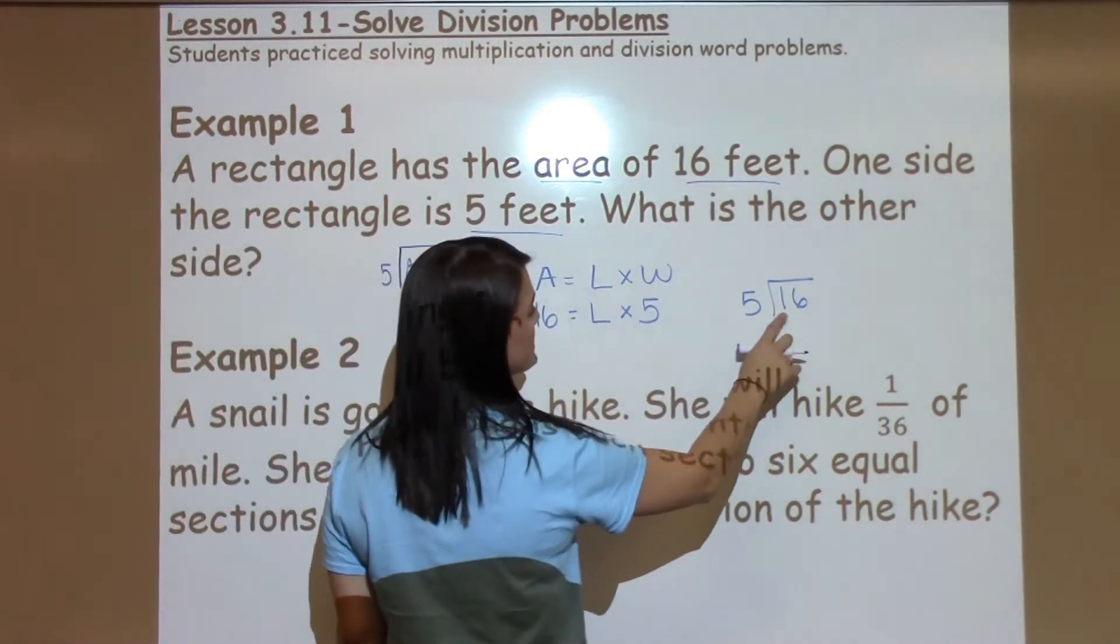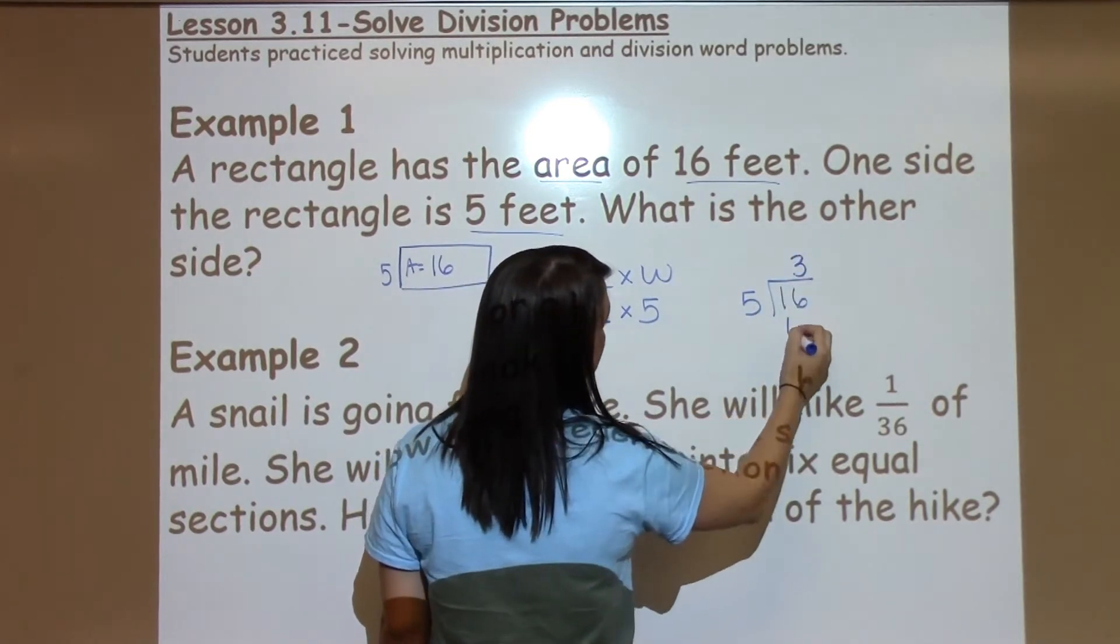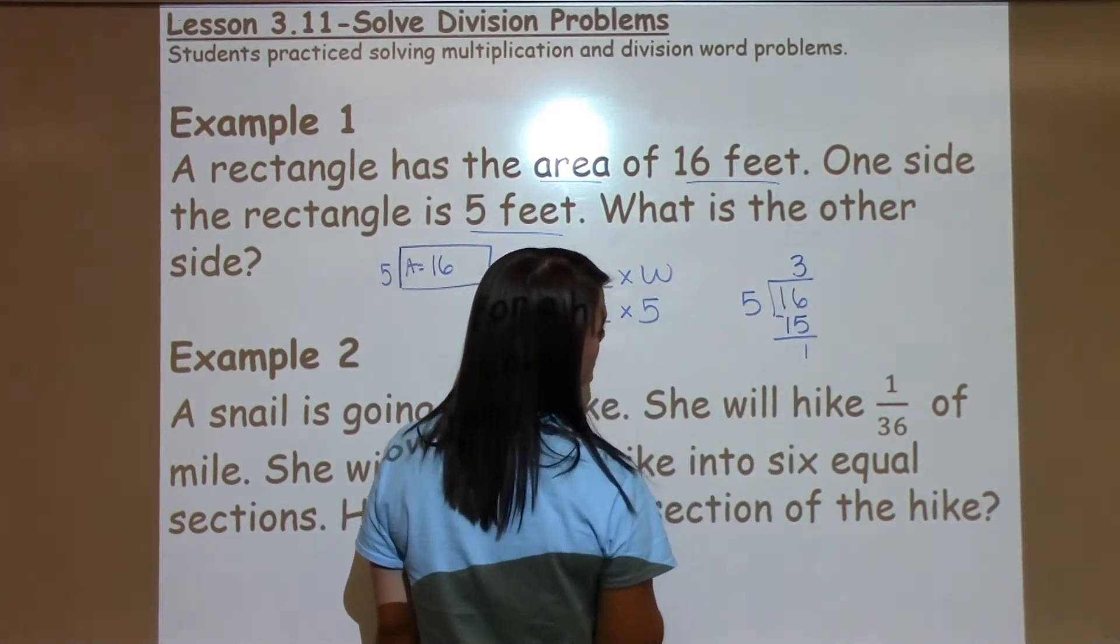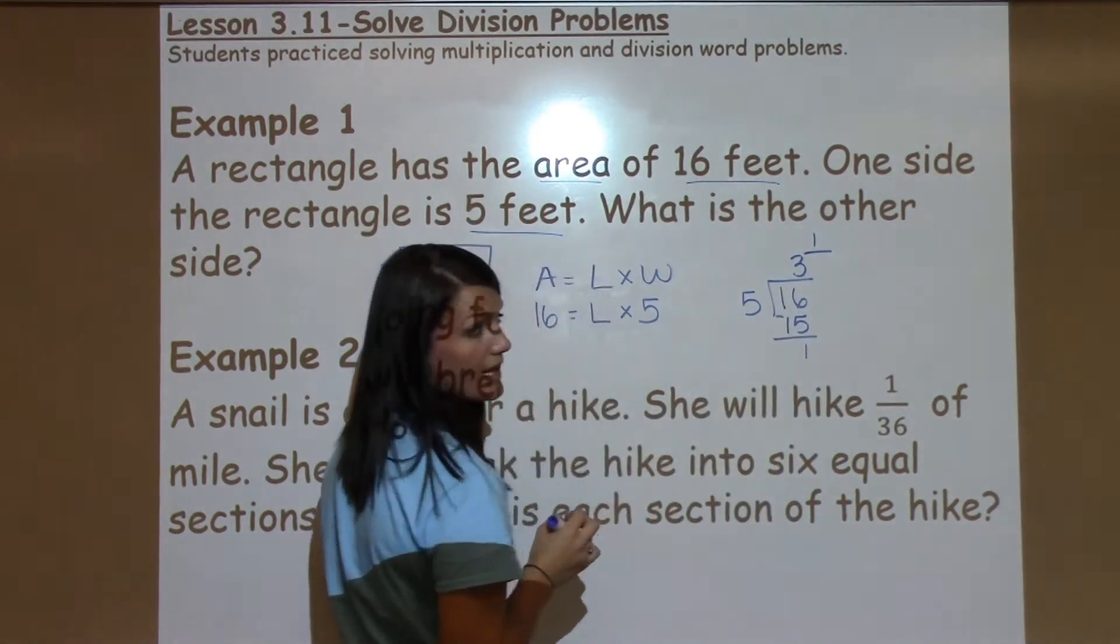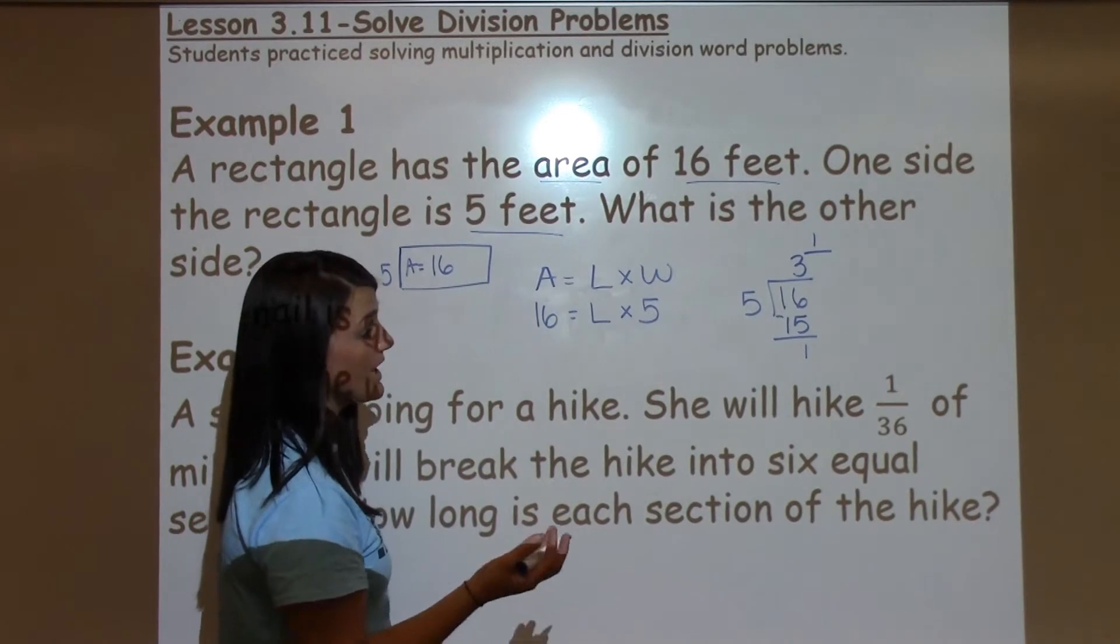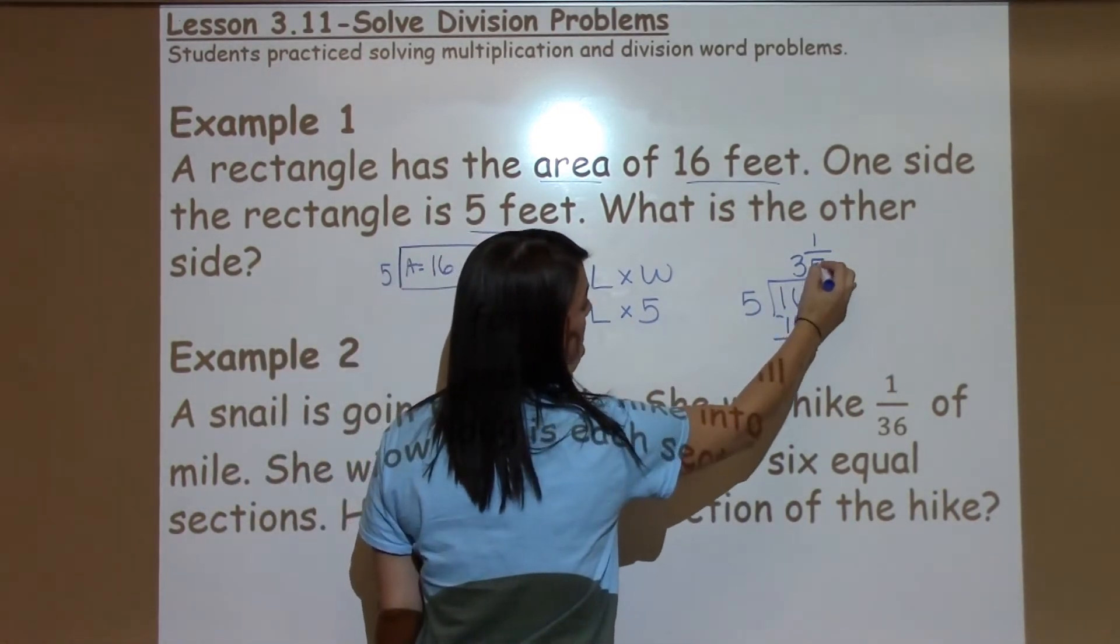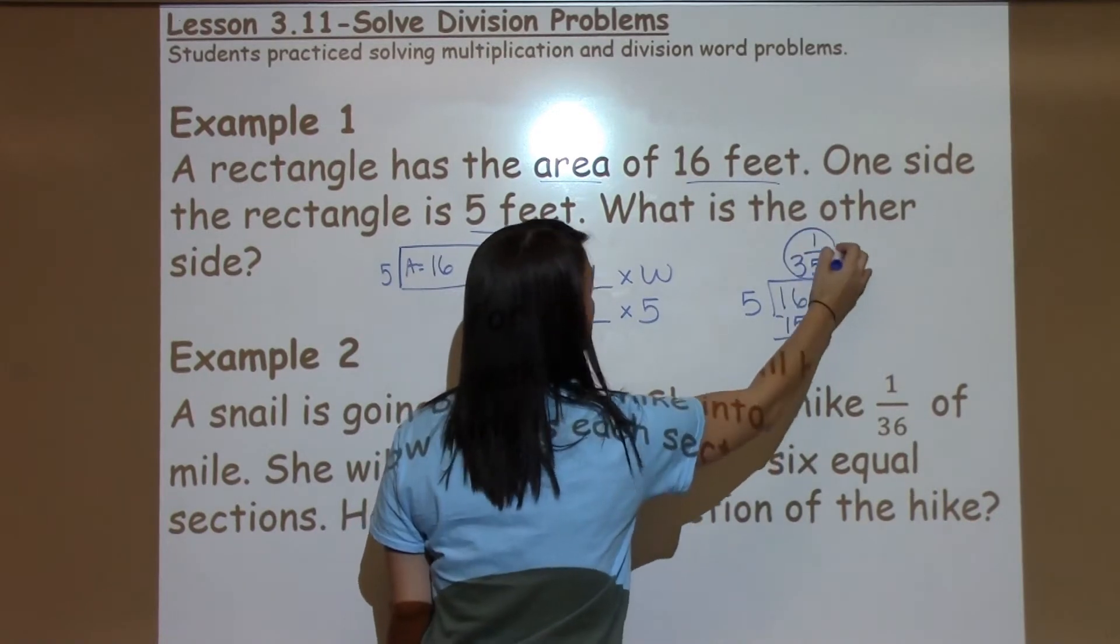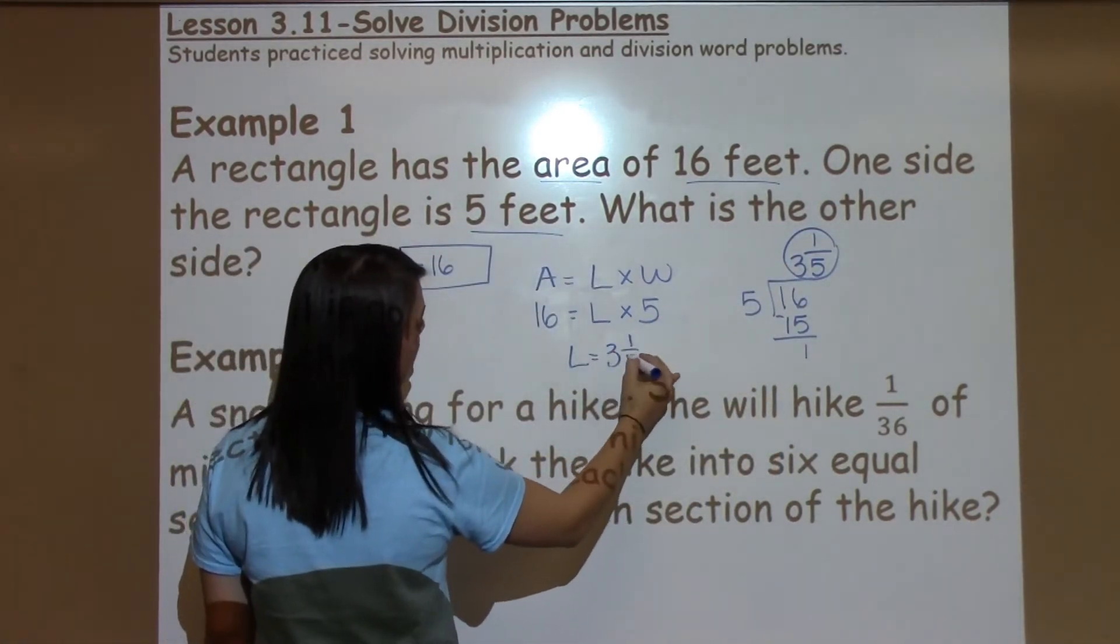So 5 goes into 16, 5, 10, 15, 3 times to get me 15. I have 1 left over. Remember that 1 becomes the numerator. Our remainder is now in 5th grade we write as numerators and the divisor is the denominator part of the fraction. So my length is 3 and 1/5.